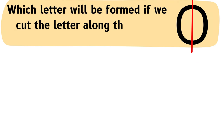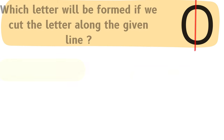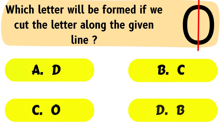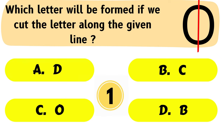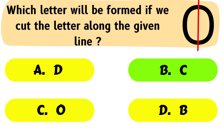Question No. 2: Which letter will be formed if we cut the letter along the given line? A. D, B. C, C. O, D. B. The correct answer is Option B: C.